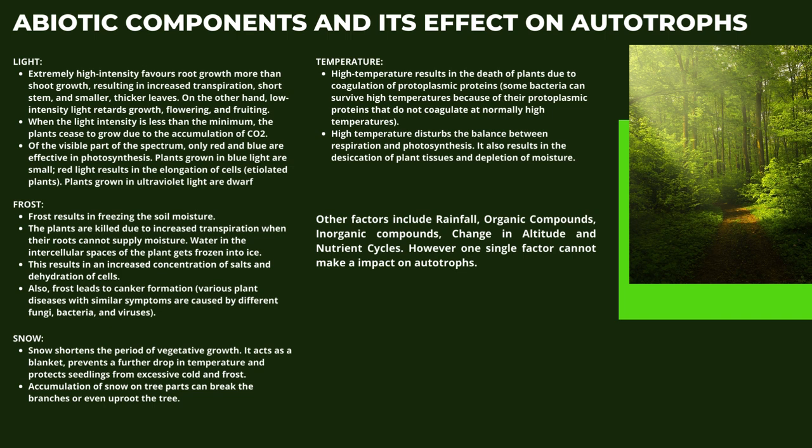Of the visible part of the spectrum, only red and blue light are effective in photosynthesis. Plants grown in blue light are small, while red light results in the elongation of cells — etiolated plants. Plants grown in ultraviolet light are dwarf.